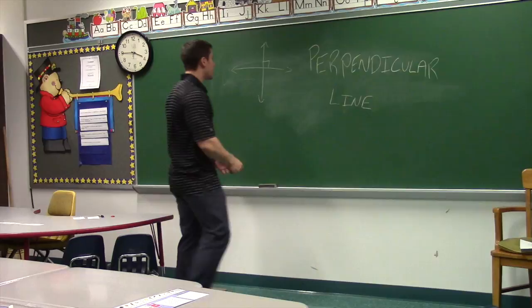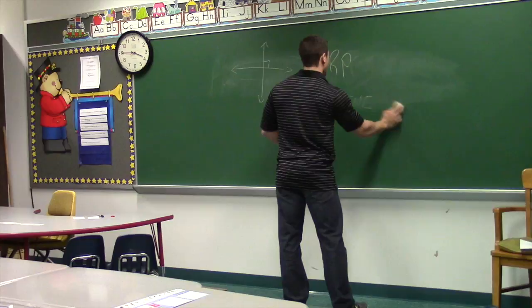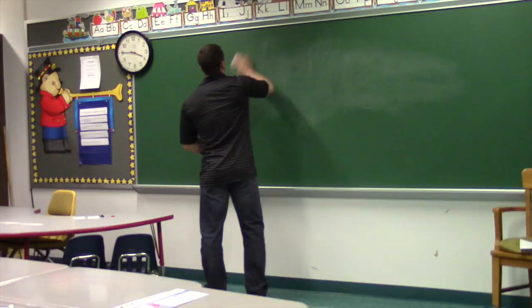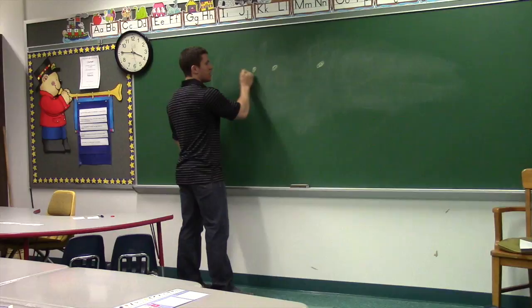If we have points — let's say three points and they're all on the same line — what can we say about those points? They're collinear. So if we have point one, point two, point three, and we have a line they're all on, they're said to be collinear.